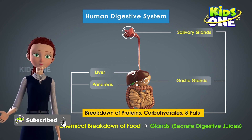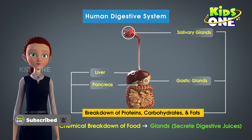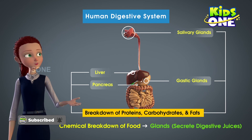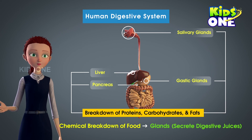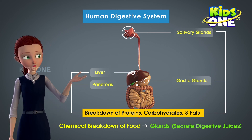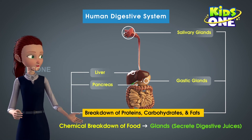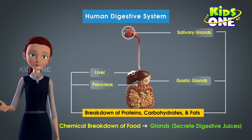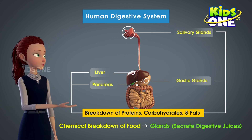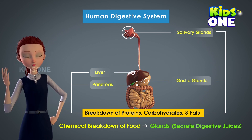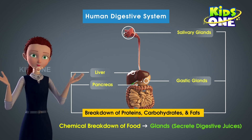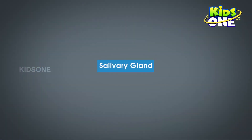These food substances are broken down into their simpler forms. We are well aware of the fact that the process of digestion begins in the mouth. That means the chemical breakdown of food begins right from the time food enters the human body. This begins with the salivary glands.